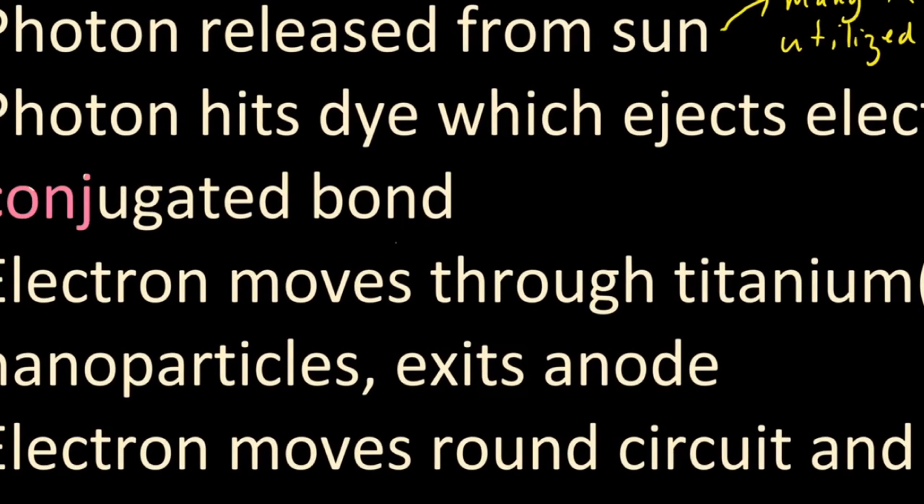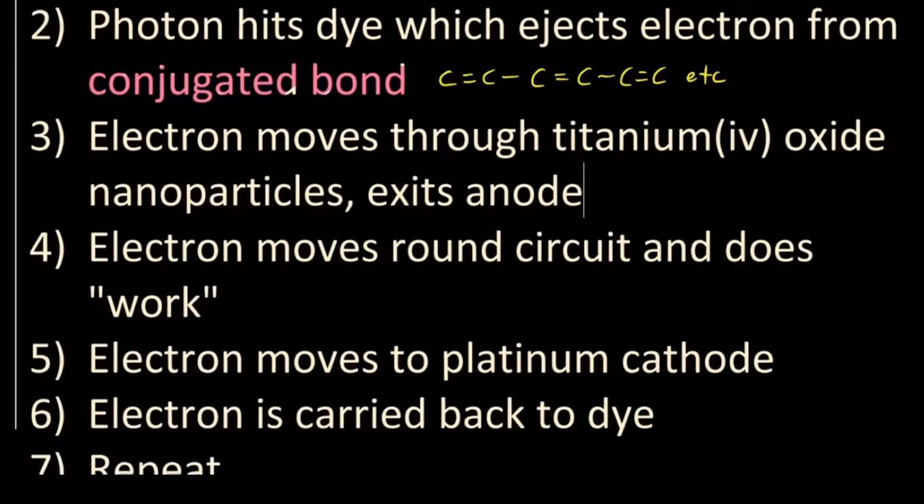Photon hits dye and ejects an electron from a conjugated bond. Well, a conjugated bond is sequential single and double bonds in an organic molecule.